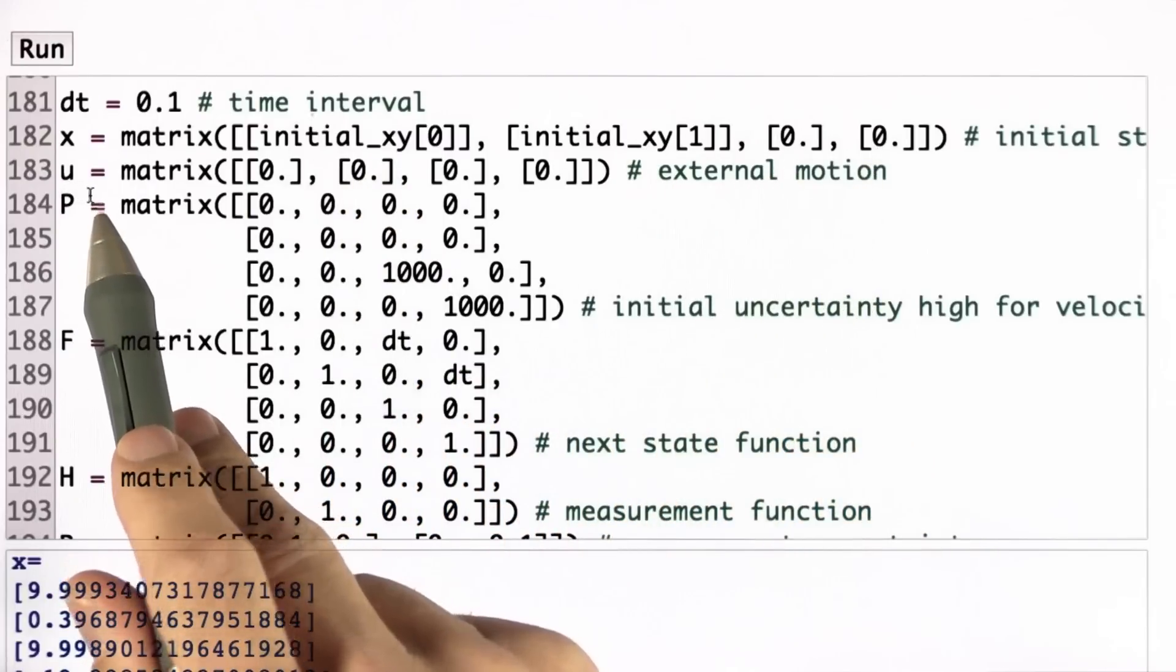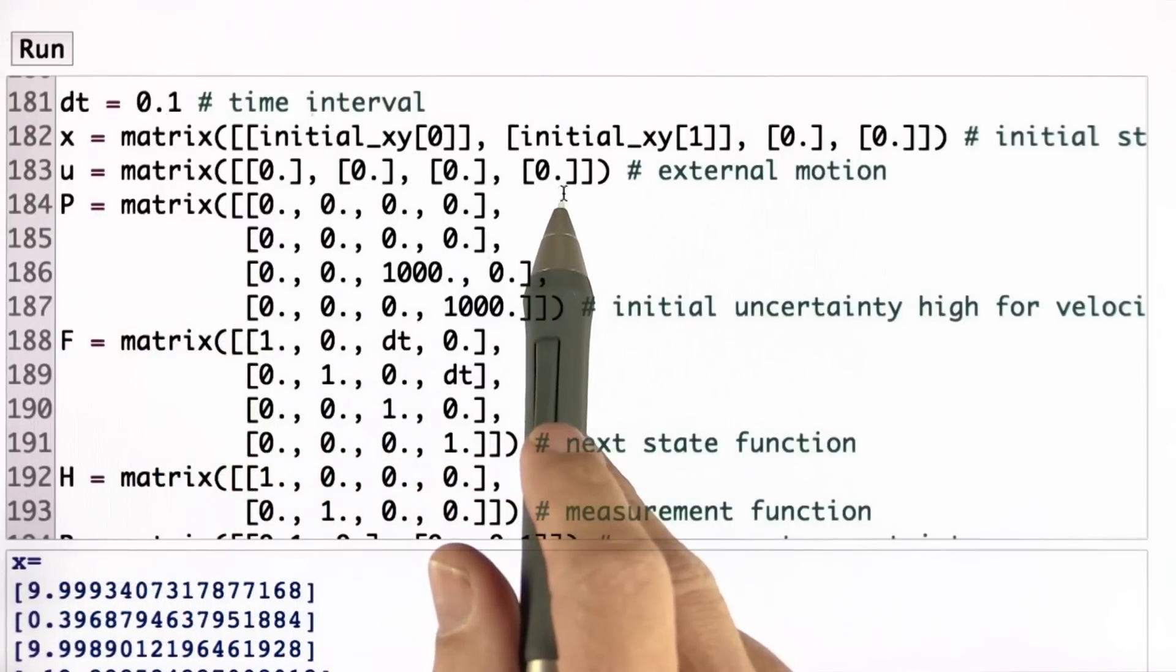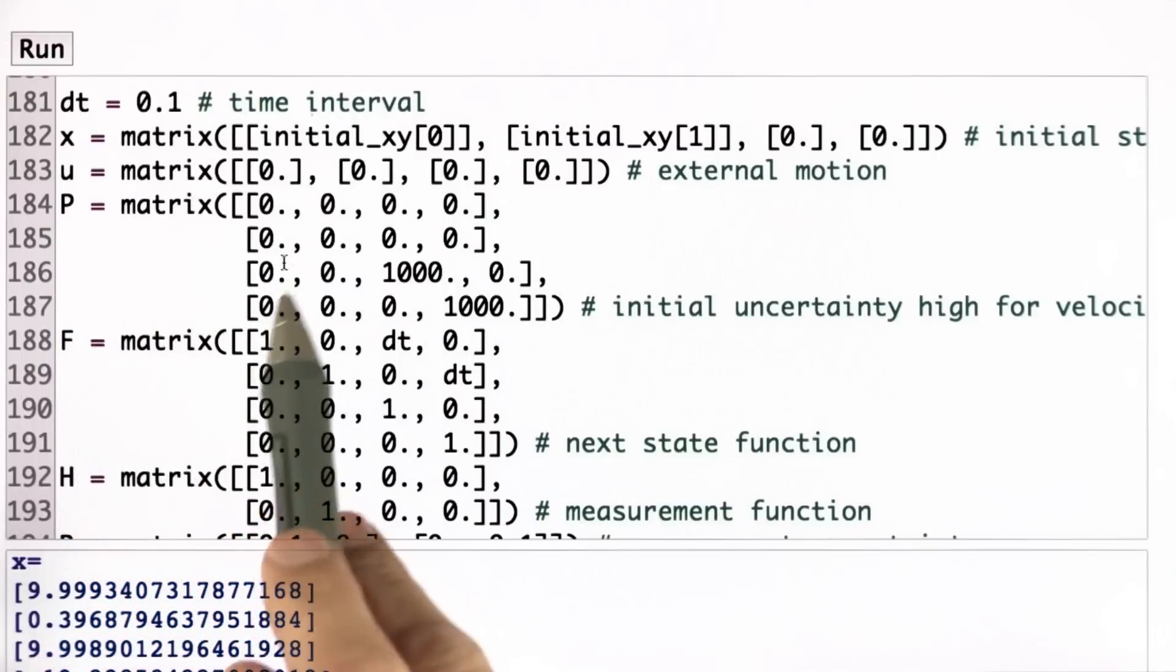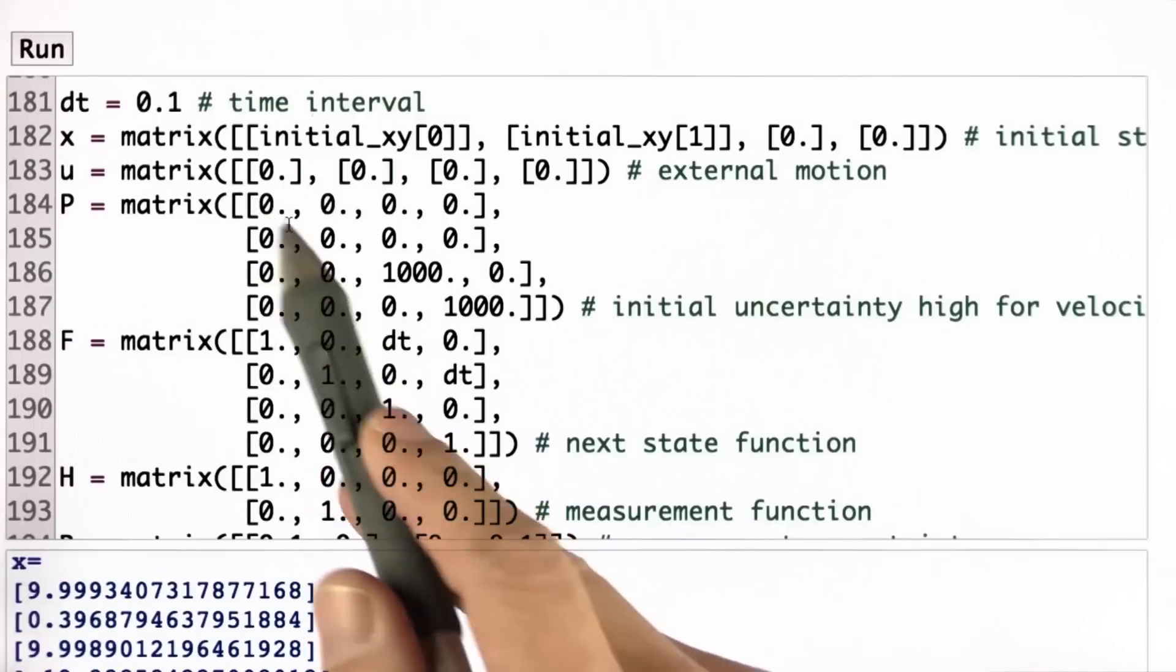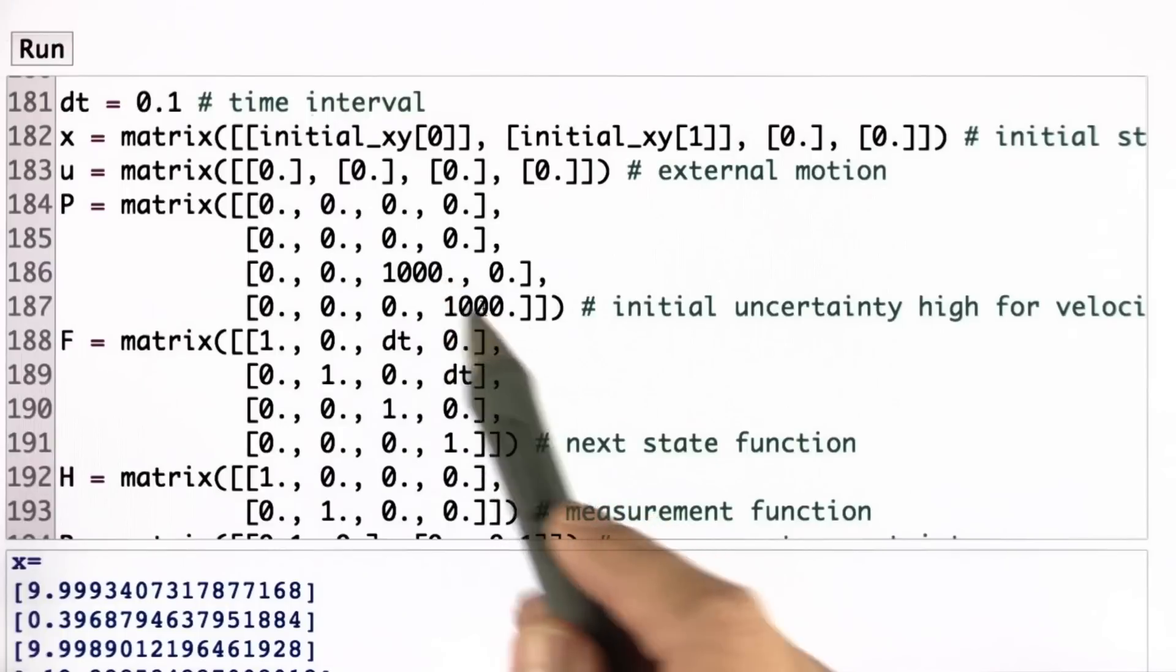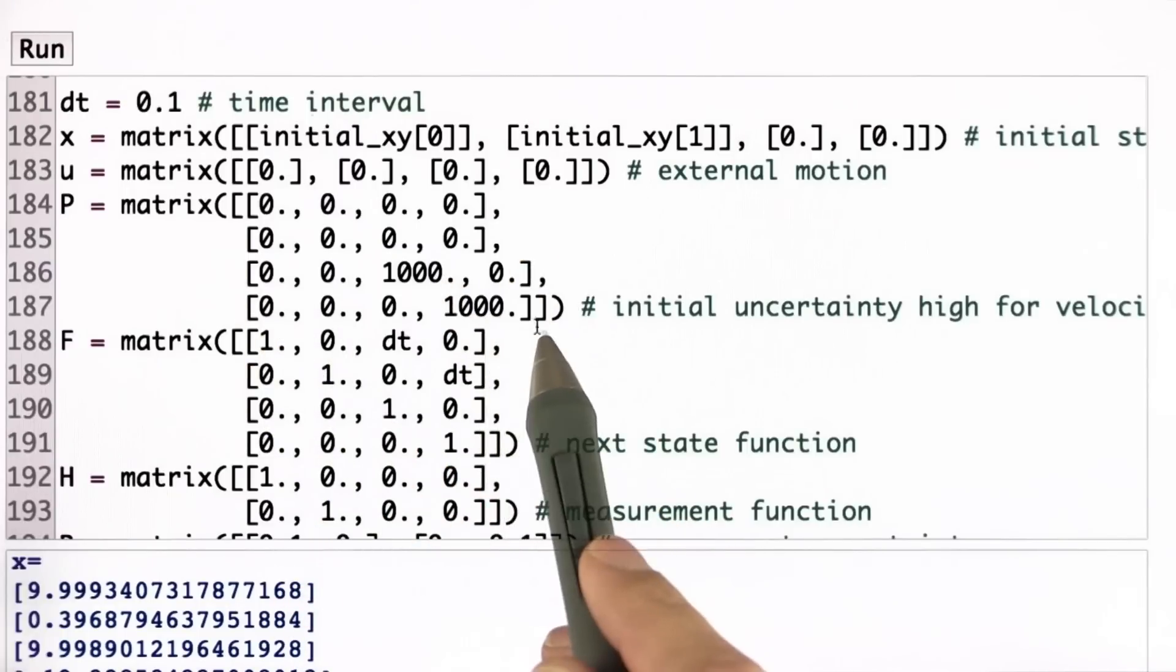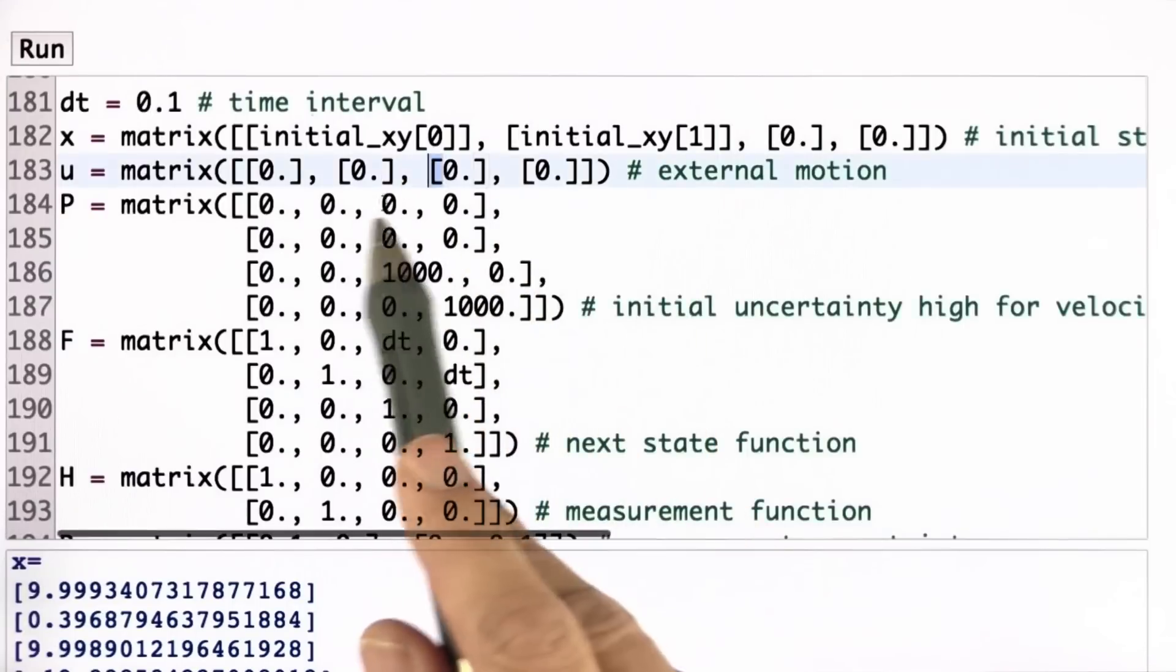My u vector, as I said in the statement of the problem, is 0 everywhere, so just ignore it. Interesting is my P matrix that measures the uncertainty, and I set the uncertainty initially for the locations to be 0. These are the two main diagonal elements over here, and the uncertainty for the velocities to be really high as 1,000. So this is my initial uncertainty matrix. This guarantees that I can really estimate velocity based on data, and I believe that the initial state estimates are correct.